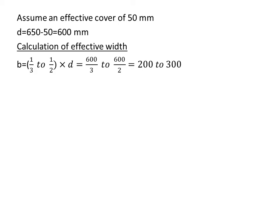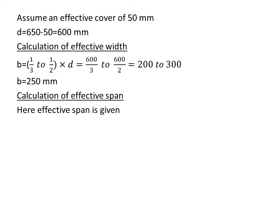That means the value that we assume should be in the range of 200 to 300. In doubly reinforced beams it has to be more than 200 mm. I will explain later why we will be considering doubly reinforced beams here. Effective width is 250 mm.